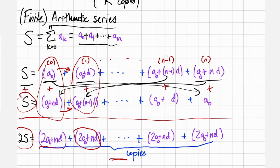And indeed, every single column gets the exact same sum, 2 times a0 plus nd. In all, we've started with term 0 and gone to term n, so there are n plus 1 copies of this value.